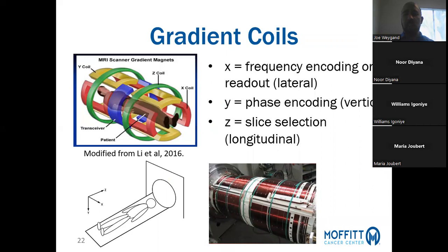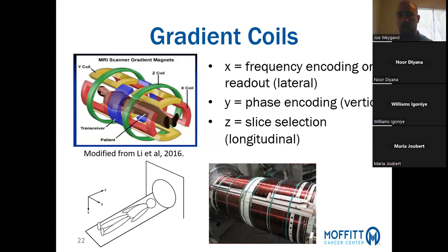The gradient magnetic fields are produced via a set of gradient coils — three of them, one for each principal spatial direction. In MRI, we don't simply call them X, Y, and Z. Our X direction is the frequency encoding or readout direction, associated with the frequency encoding gradient. The Y direction is the phase encoding direction. And the Z direction, which is along the direction of the external magnetic field — so the cranial-caudal axis of the patient — is what we call the slice selection direction, associated with the slice selection gradient.